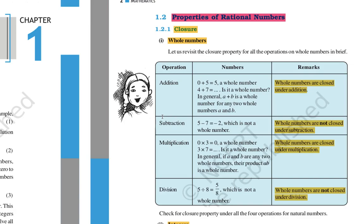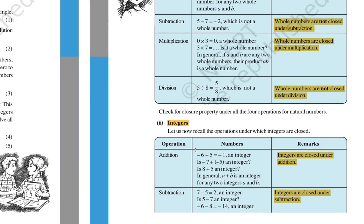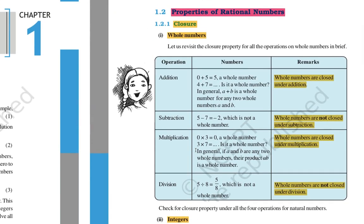The properties we need to study are: first, closure property; second, commutative property; third, associative property; and fourth, distributive property. We will apply these properties on addition, subtraction, multiplication, and division for whole numbers, integers, natural numbers, and rational numbers. In this chapter, mainly we study for rational numbers, though we will revise the others as well.